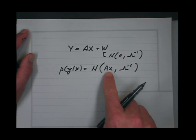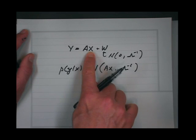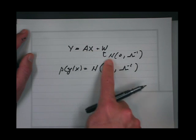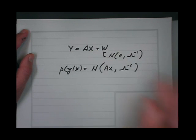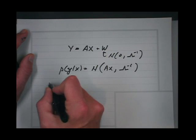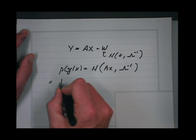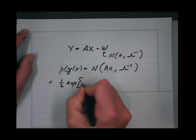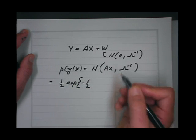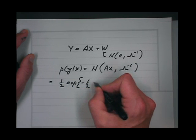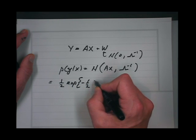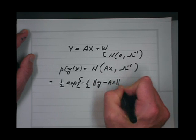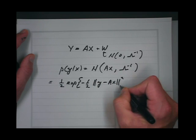So basically, if you know x, then the mean of y is Ax, and its variance is the same as the variance of w. So I can write down the distribution: it's equal to one over Z times exponential of minus one half times the norm of y minus Ax, norm squared, with lambda here.